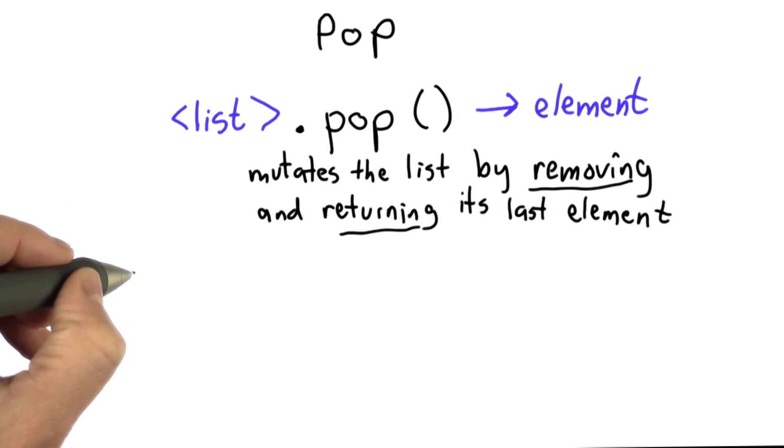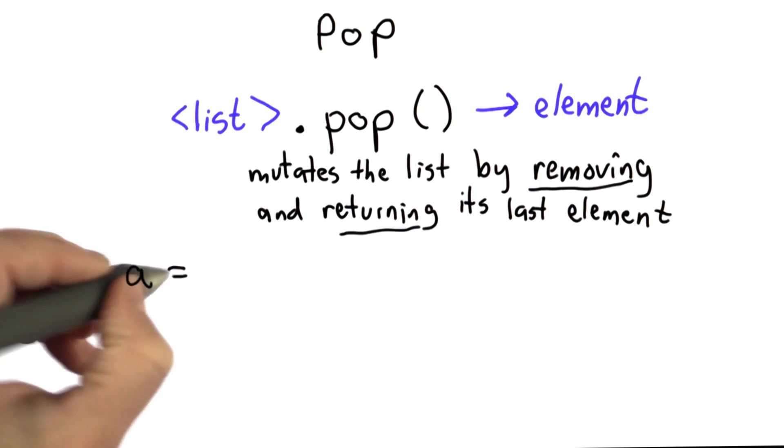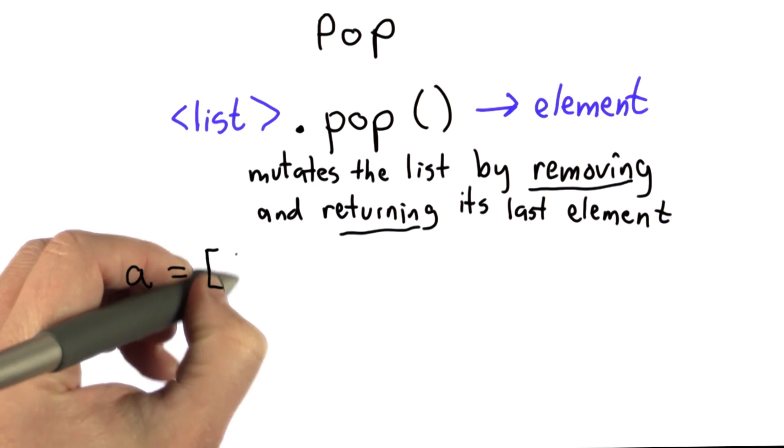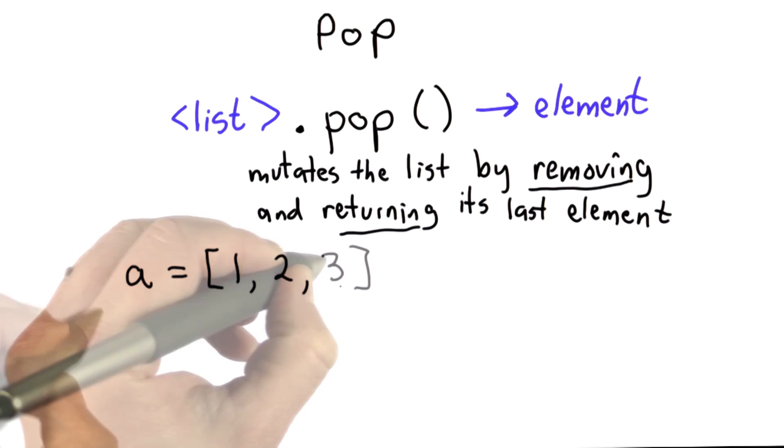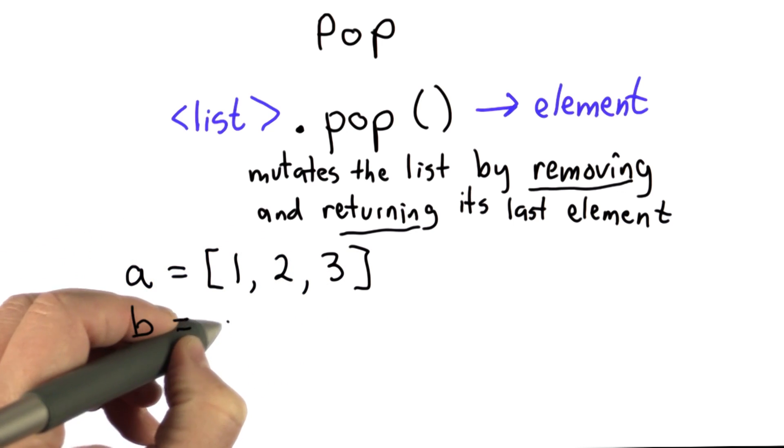So here's an example. If we started by initializing the variable a to be the list [1, 2, 3], and then we'll make b an alias for a.